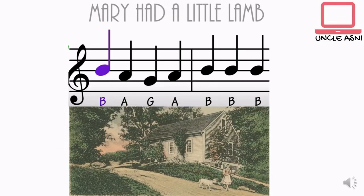The song that we are going to use to program the Maker Uno is called Mary Had a Little Lamb. Why? This song is quite simple for us to learn. A little history about this song: it is a song about a girl back in the US in 1815 who had a lamb as her pet. We are going to arrange the sound of the buzzer and turn it into this song.